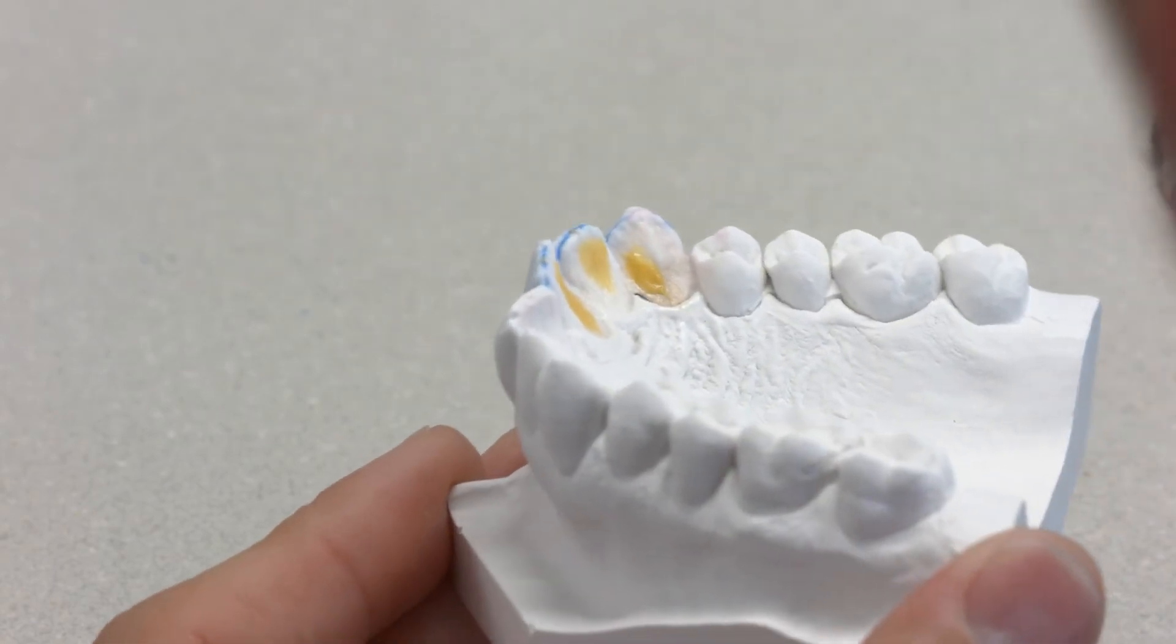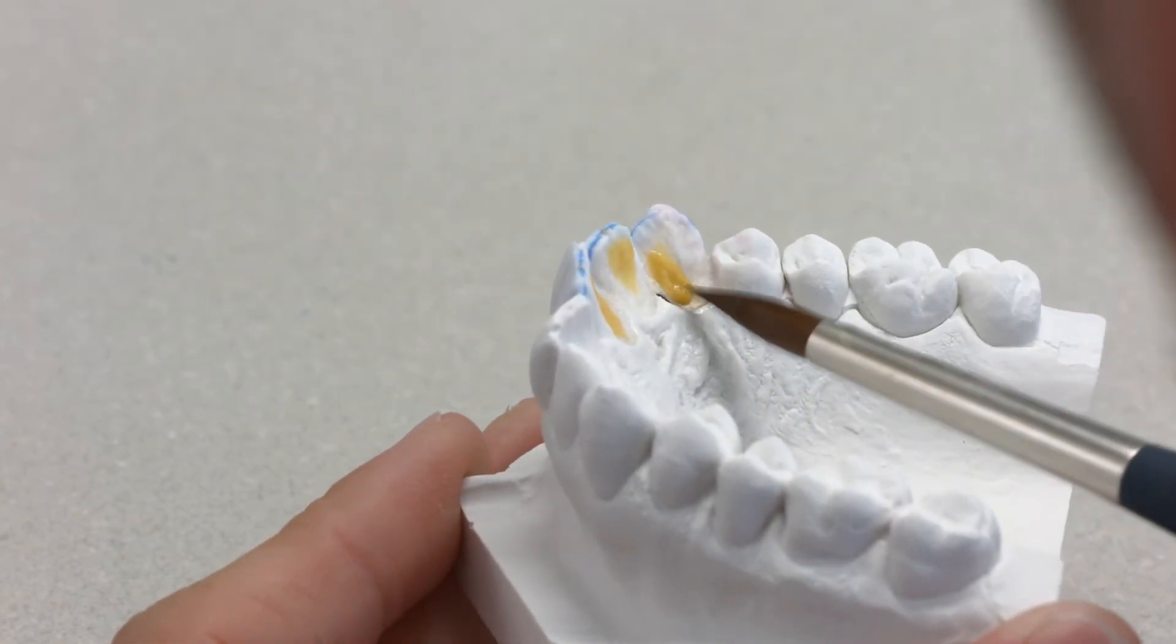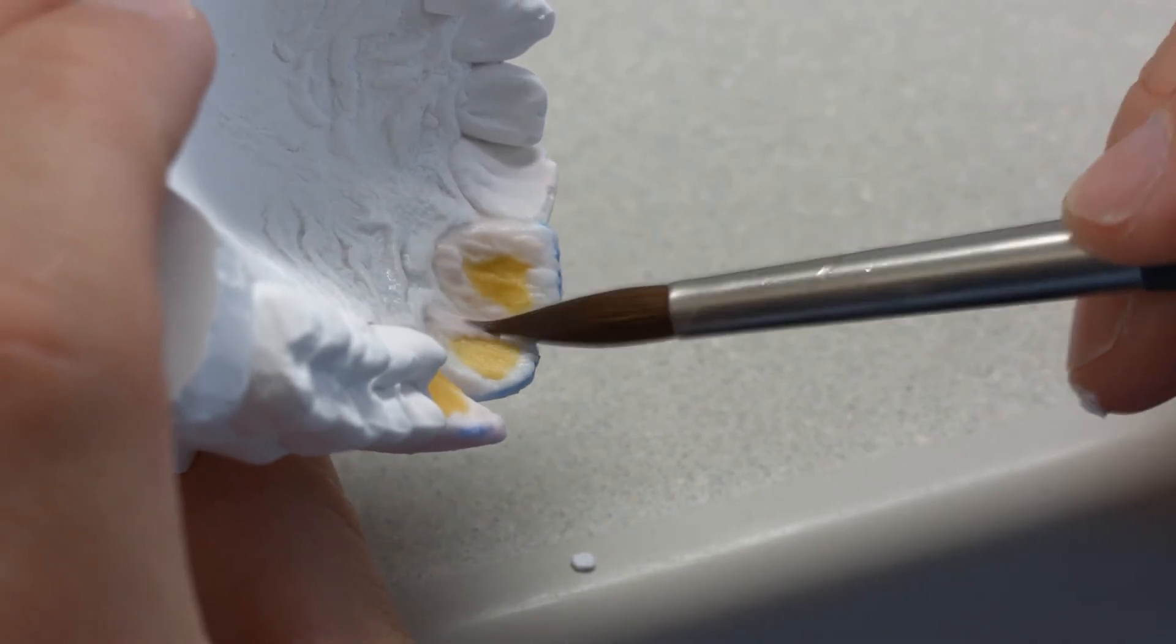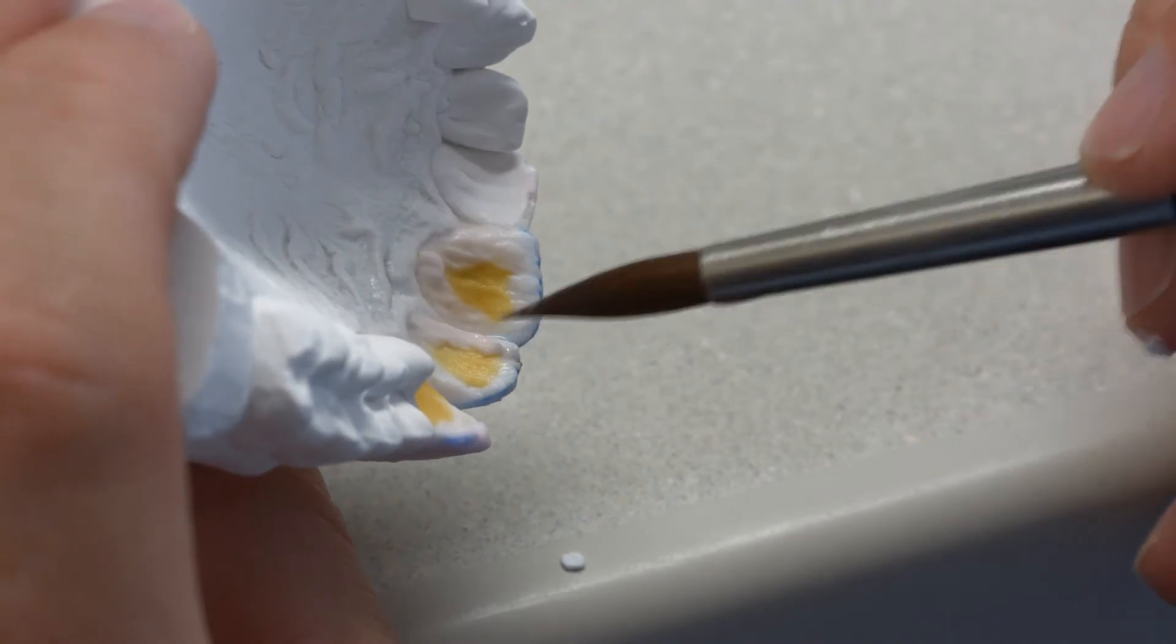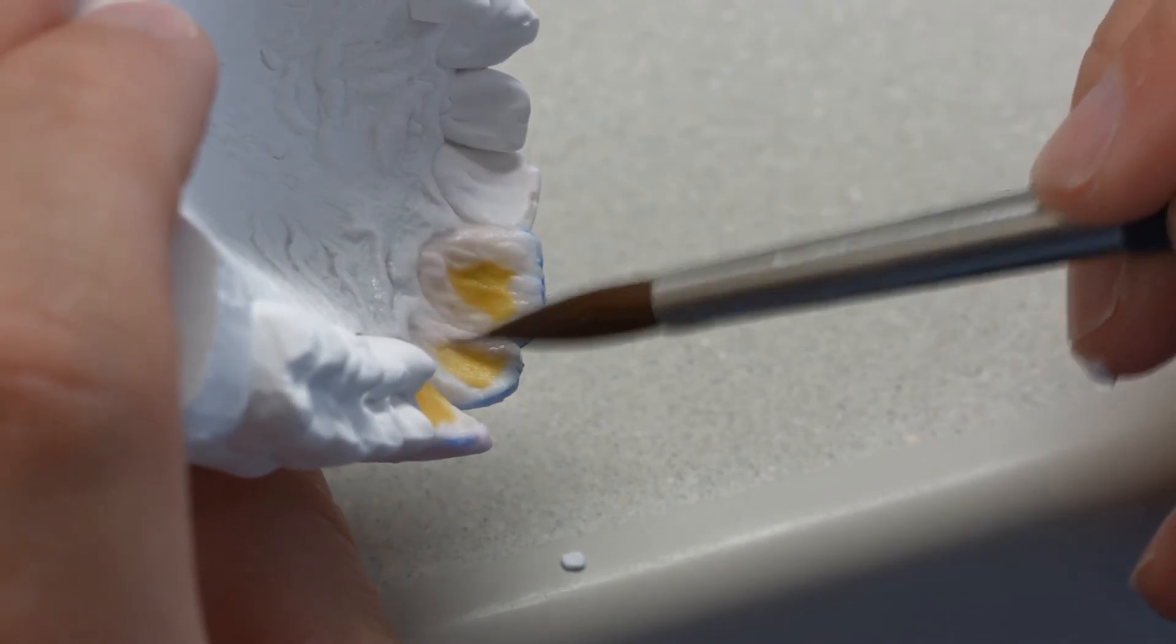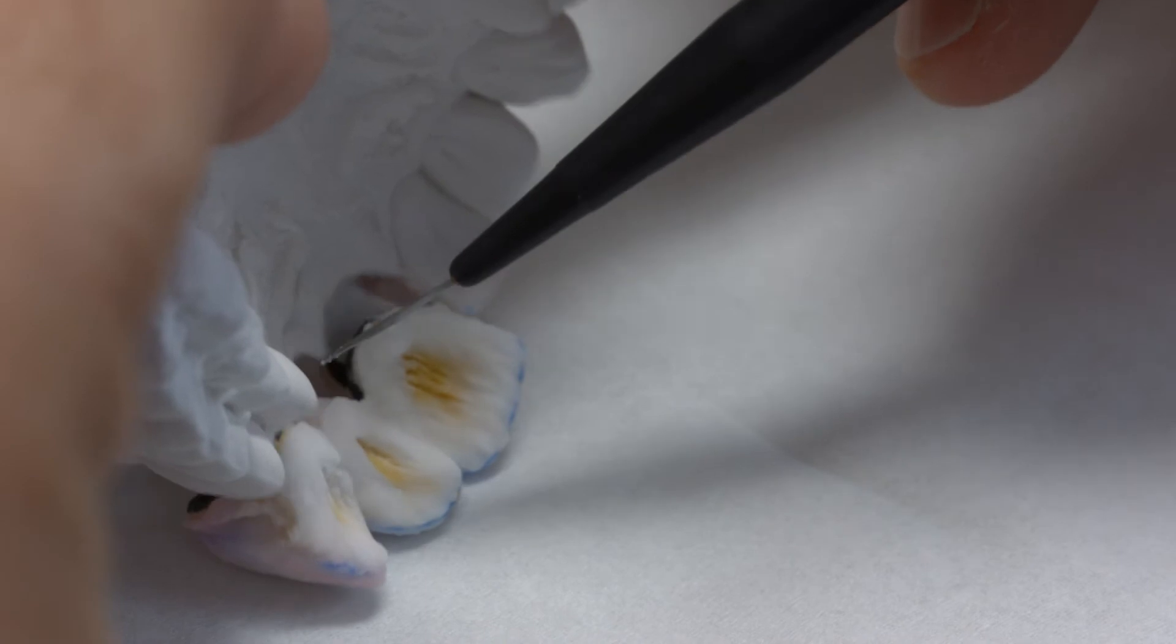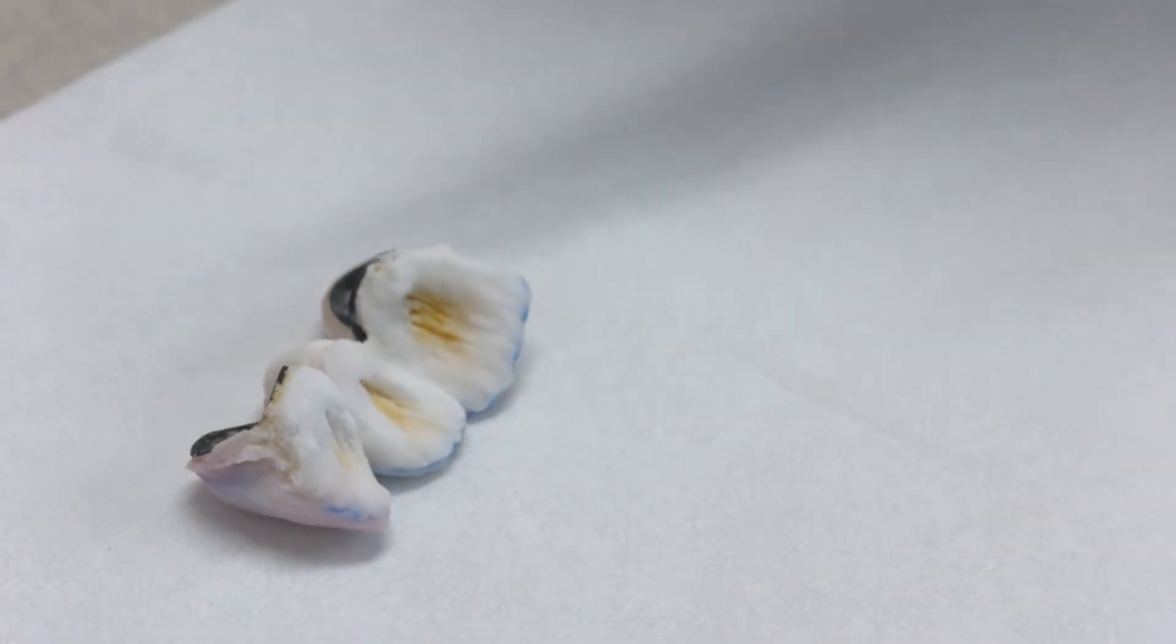Cover the palatal fossa with IPS Style Ceram Occlusal Dentin. Line the marginal ridges with dentin material and cover the basal and marginal ridges with incisal and transfer materials. Once you have applied all the ceramic details, you can lift the bridge from the model.